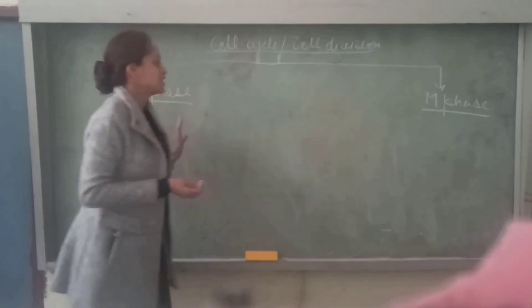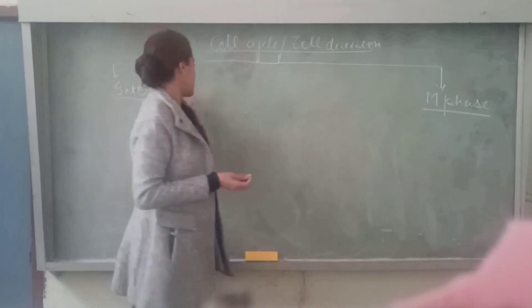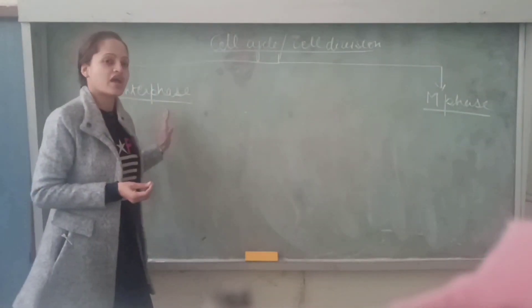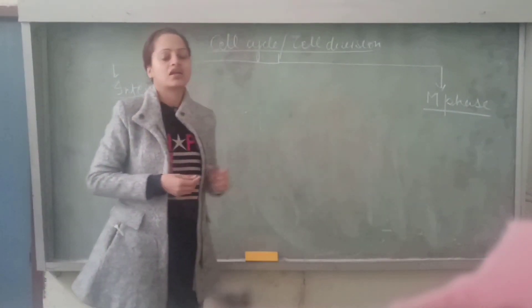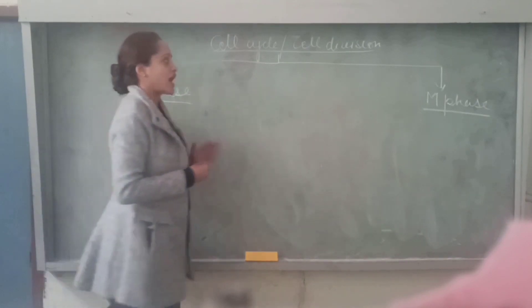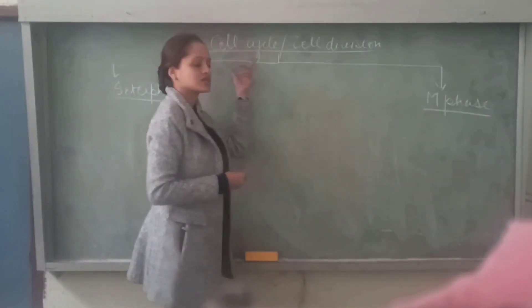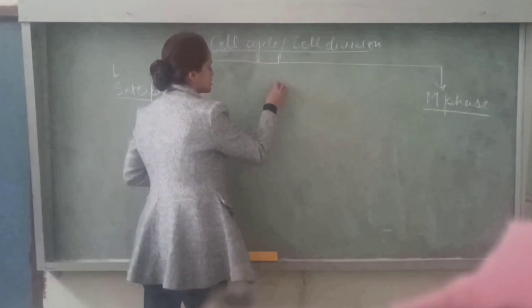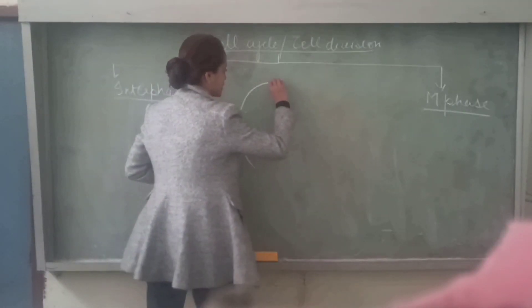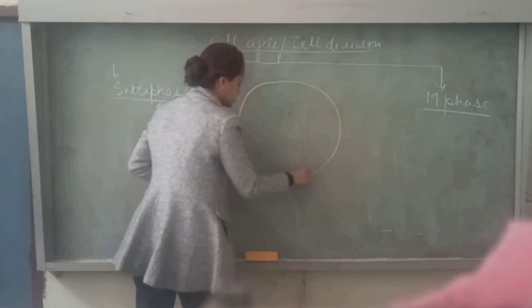Now all these events including both interphase and M phase take place in a cyclic manner. That's why we also call it cell cycle. This is how it takes place in a cyclic manner.